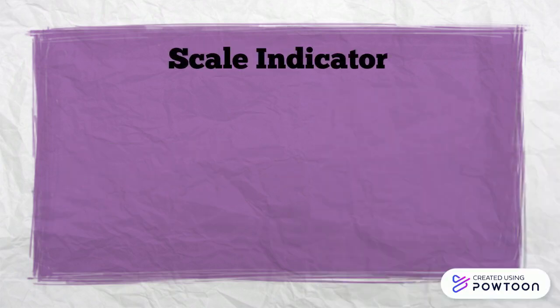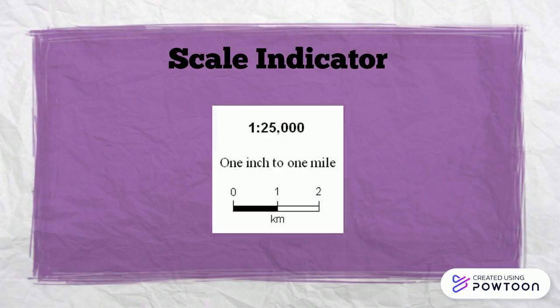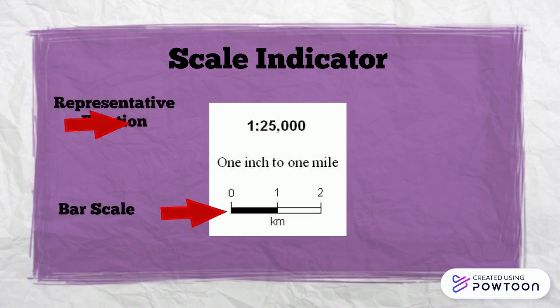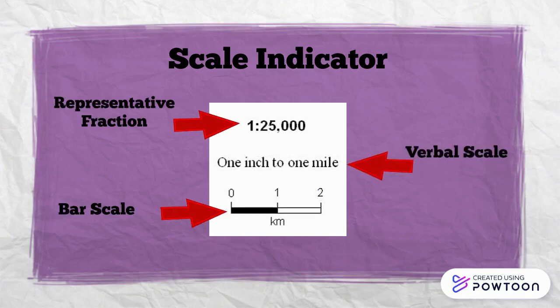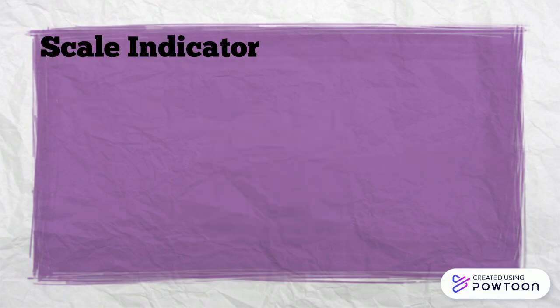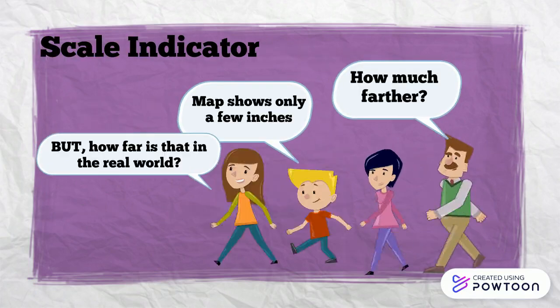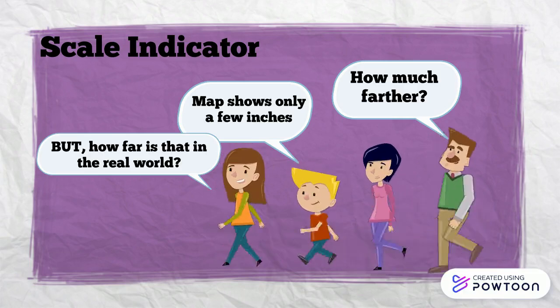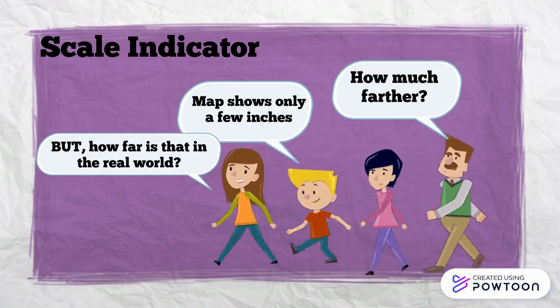Scale Indicator. The scale of the map is typically indicated by a bar scale, a representative fraction, or a verbal scale. The reader must be able to determine the relationship between a unit of measurement on the map and a unit of measurement in the real world.